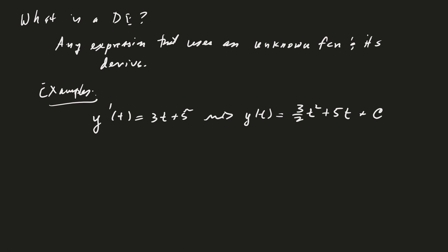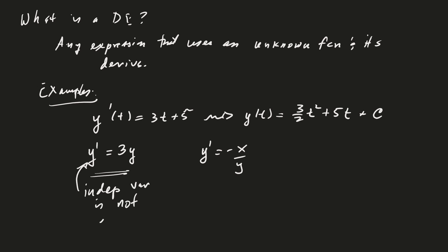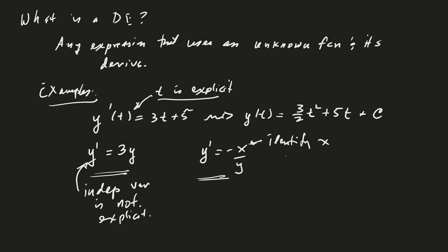Some other examples that we don't immediately have solutions for: y prime equals 3y, or y prime equals minus x over y. Notice that in these expressions the independent variable is left off — it's not explicitly given. So you want to decide whether to use t or x and stick with it. In the first case t is explicit, so use t. In the second case, x appears, so identify x as the independent variable.